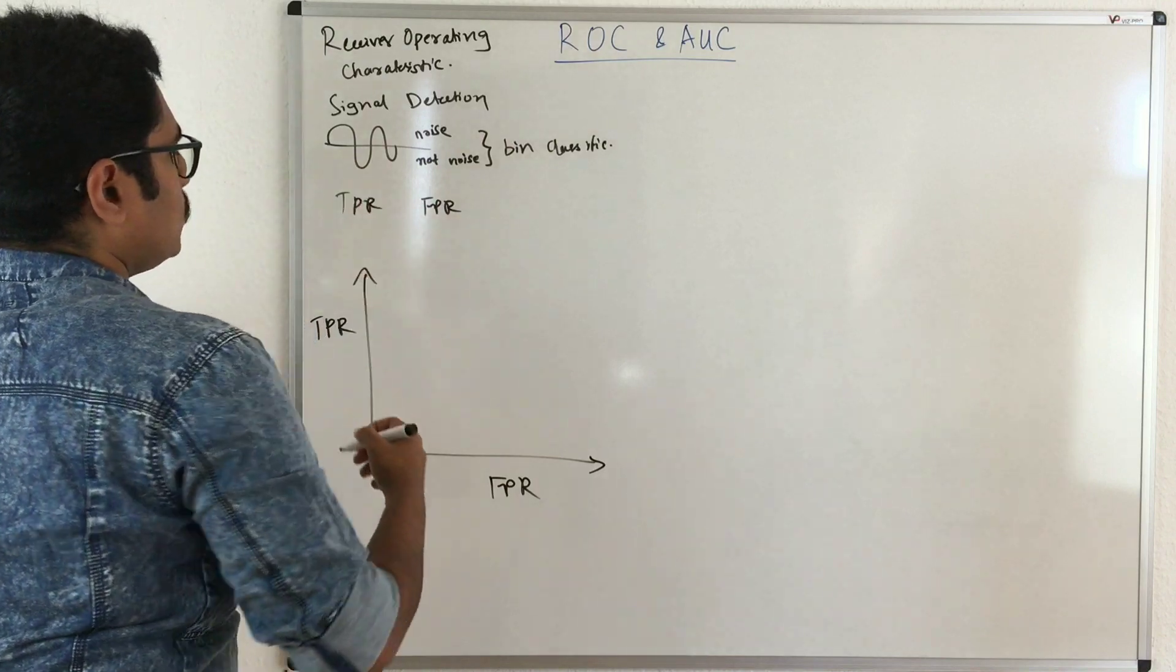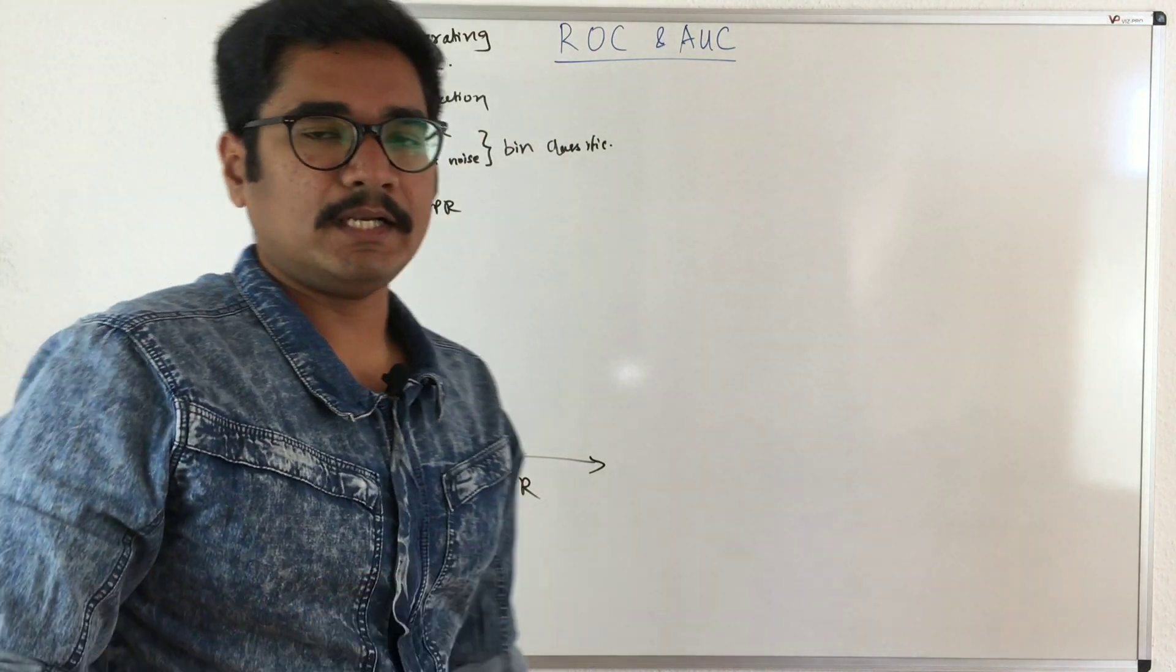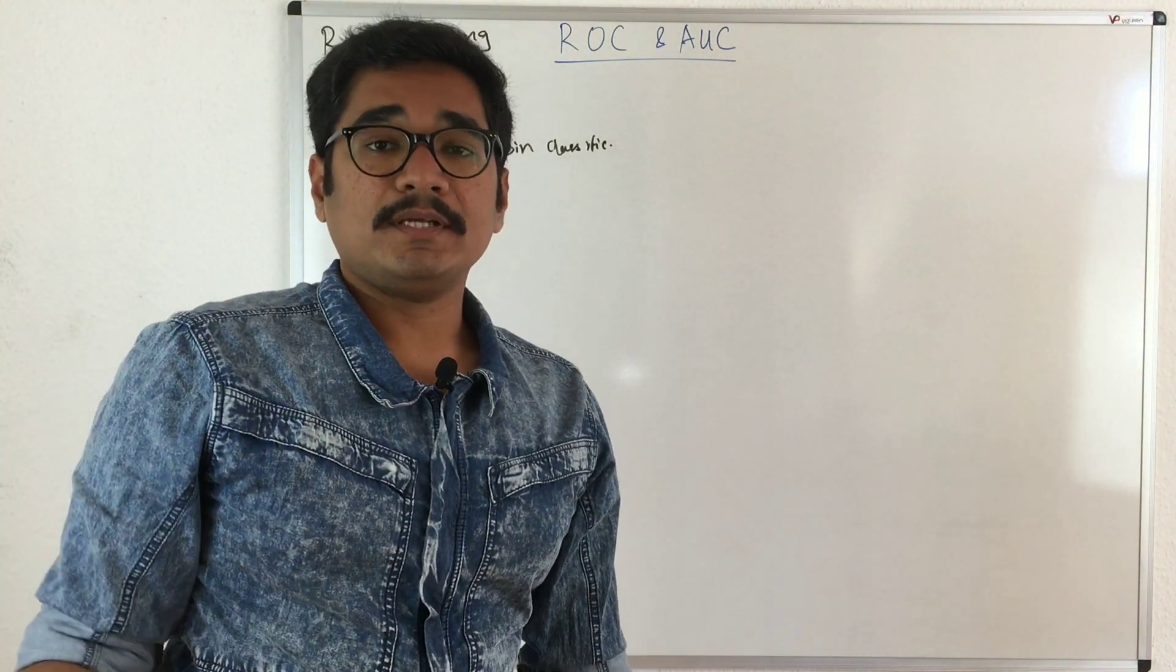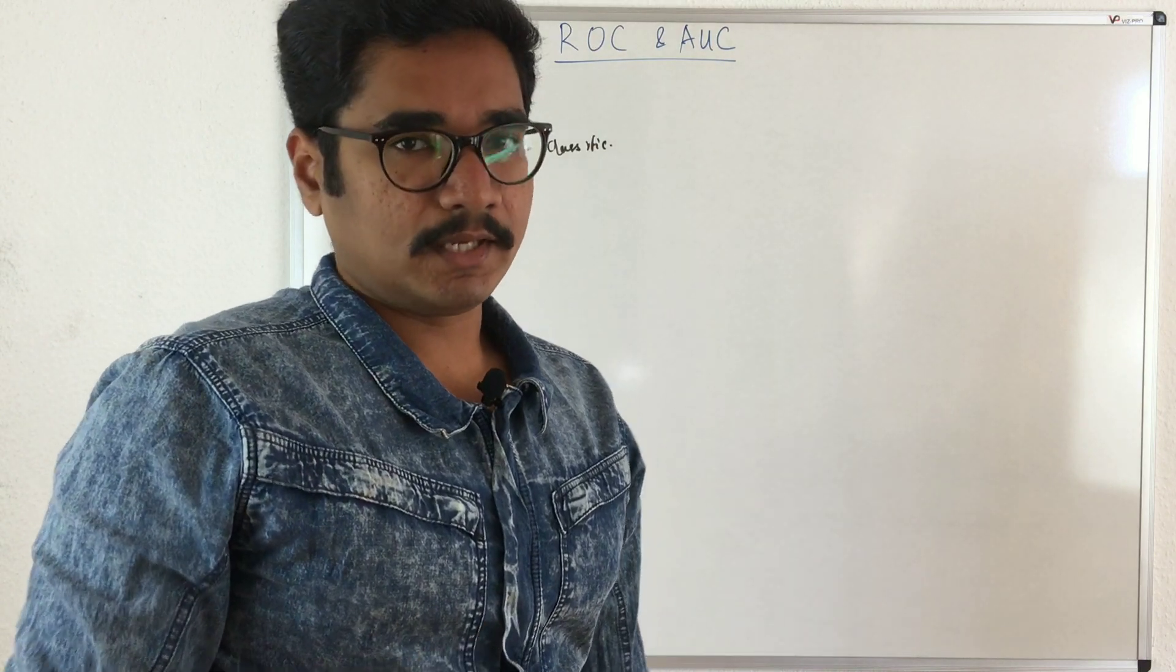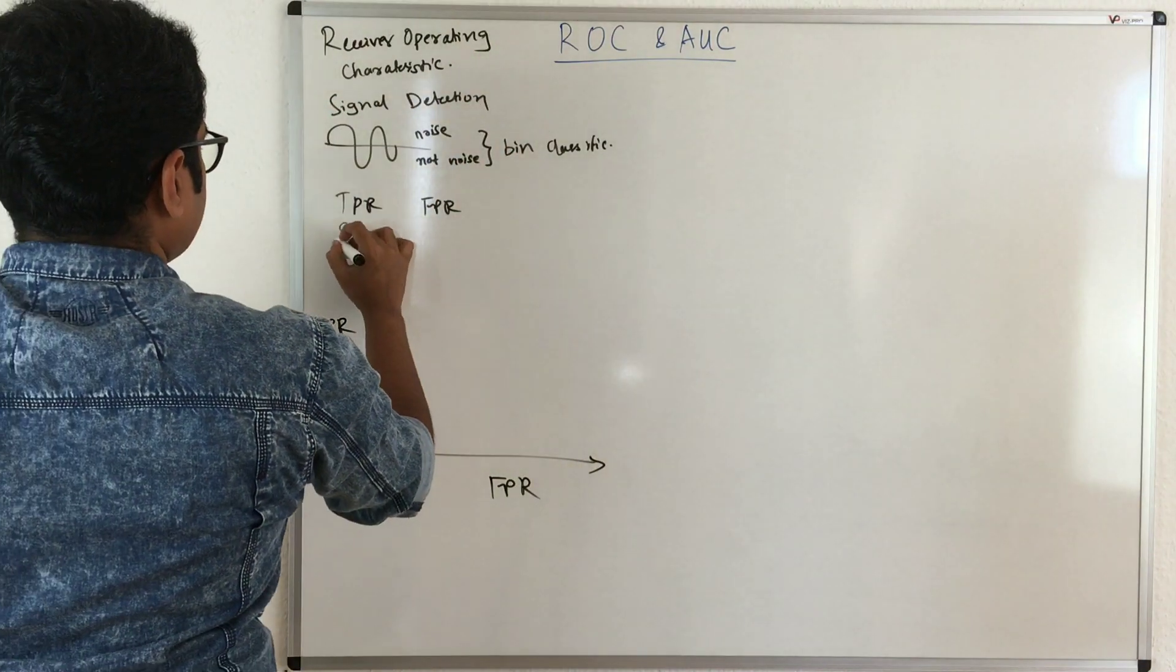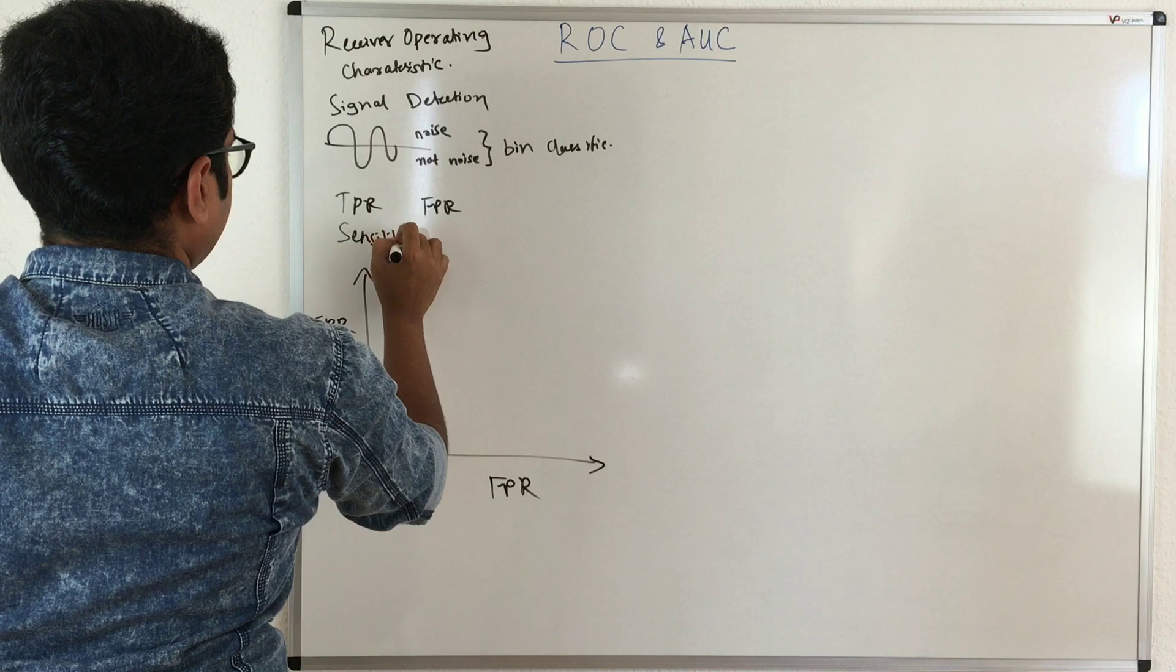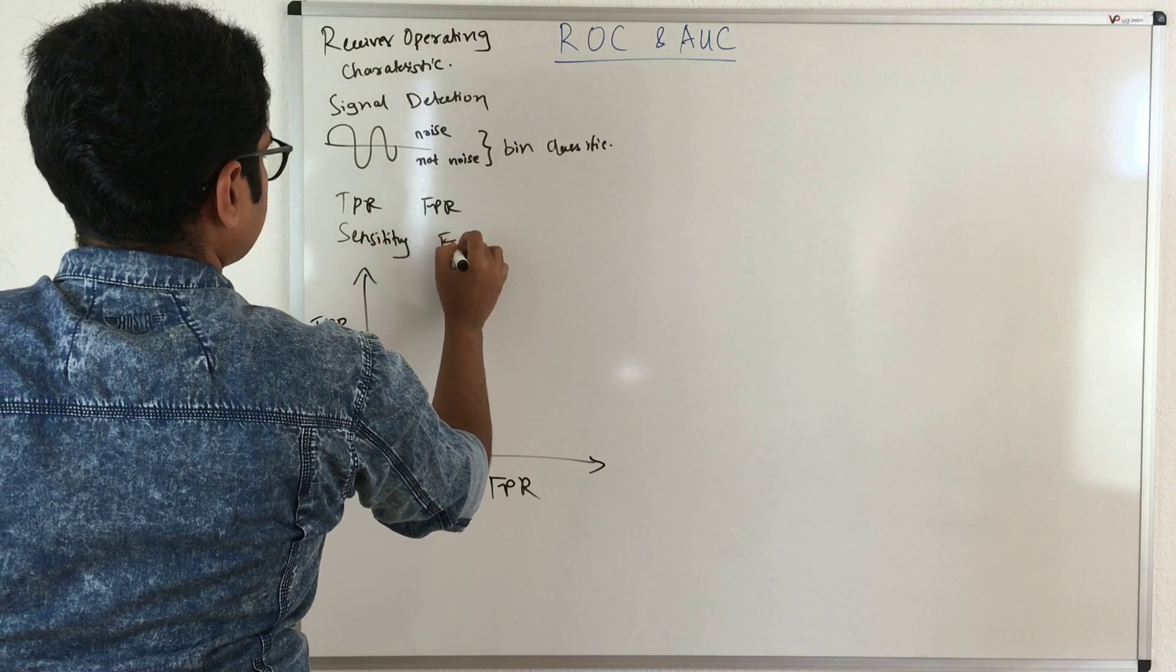So TPR is the fraction of positive examples correctly classified and FPR is the fraction of negative examples incorrectly classified. TPR is also called sensitivity and FPR is called fallout.